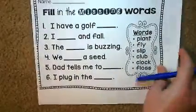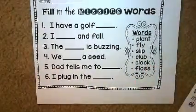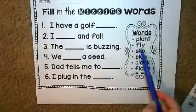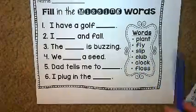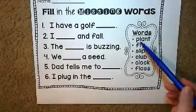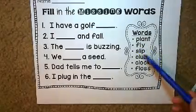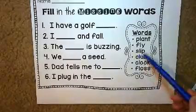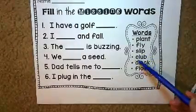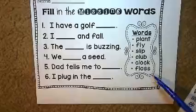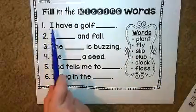Some more choices you could do are fill-in-the-missing-words. It already gives you a sentence and a word bank on the side. These are all L-blend words: we have bl, fl, sl, cl. We can read the words: plant, fly, slip, club, clock, floss.